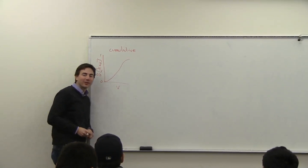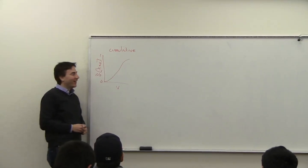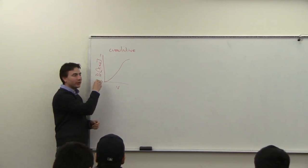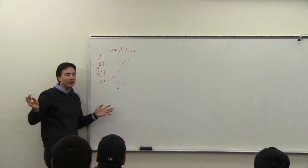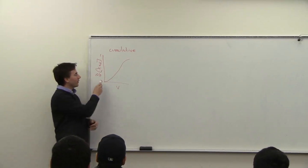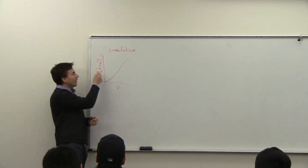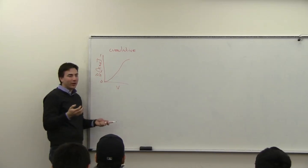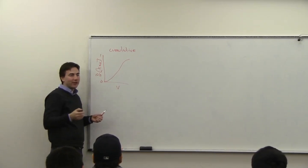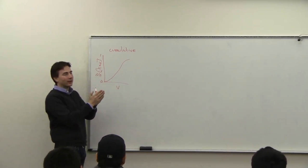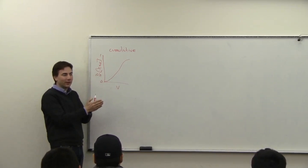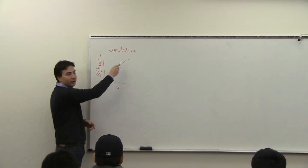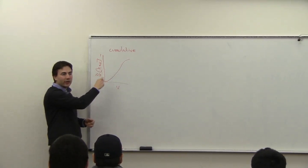If you do a cumulative density plot, you don't have any of these issues, because you can define exactly what the probability is that an event is less than a given value. It captures all the information with no confusion about events having probability zero of happening but still being significant over a range, or boundary issues. That's why I ask you to plot your data in this way.